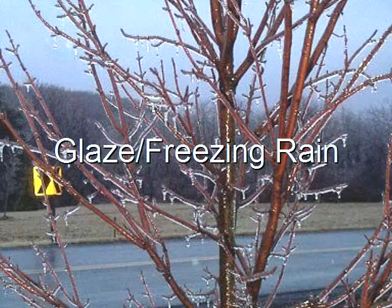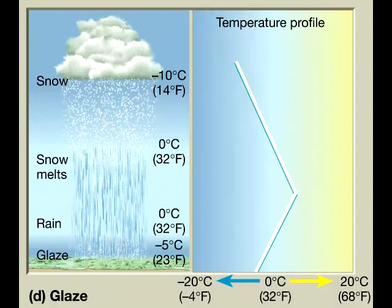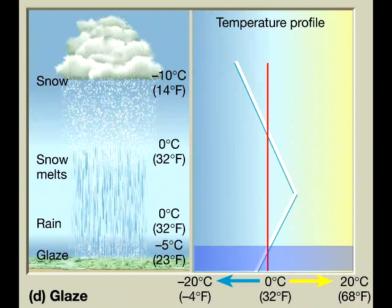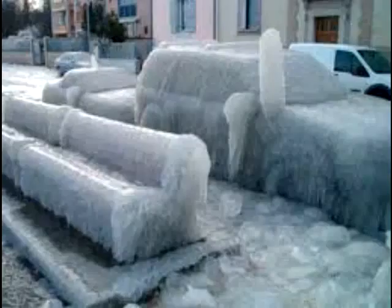Supercooled raindrops that freeze on contact with solid objects are called glaze. Similar to sleet, glaze requires the presence of an inversion layer. Glaze is formed when the sub-freezing lower air layer is not thick enough for raindrops to freeze. It can form a thick coating of ice, which is also called freezing rain.